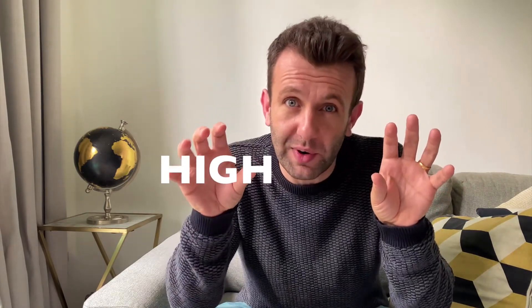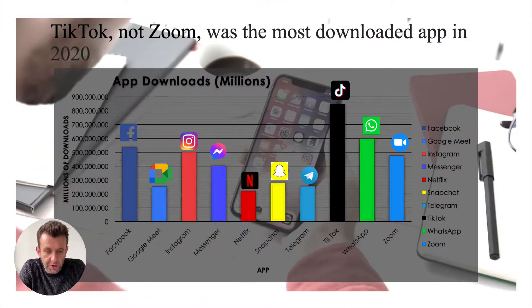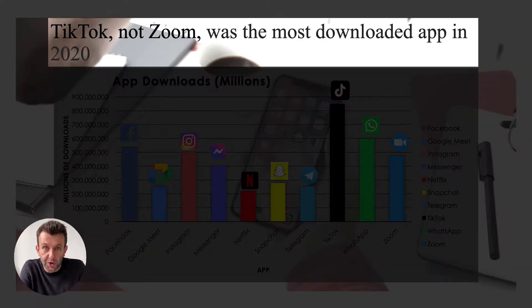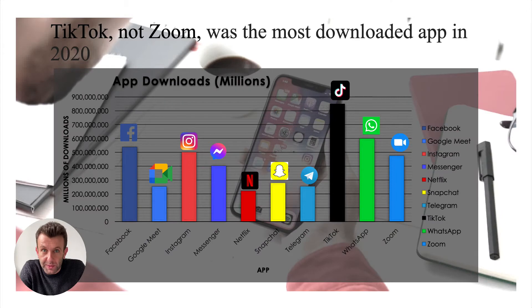What we're going to do is take you through an example where we take something that has a low data-ink ratio and transform it into something with a high data-ink ratio. This is a chart showing the app downloads of the top 10 apps in 2020. The headline is that TikTok, not Zoom as most people probably thought, was actually the most downloaded app in 2020.